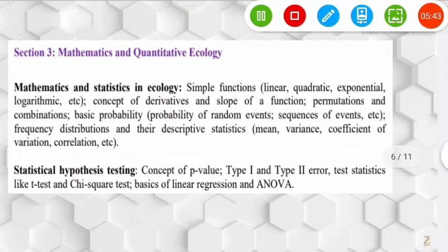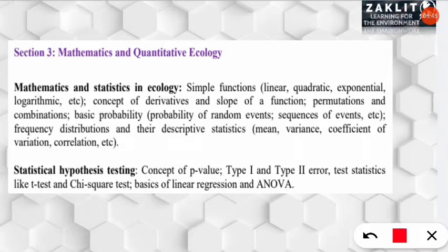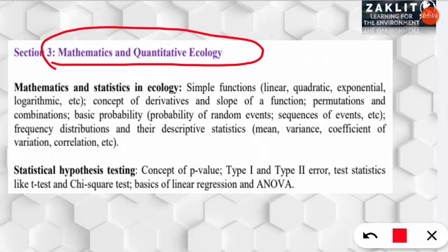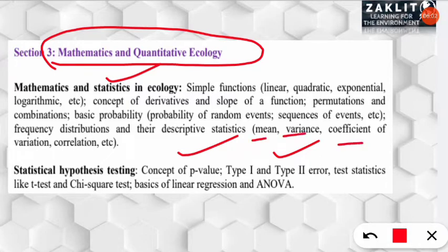The third section deals with mathematics and quantitative ecology, where statistics is very important. If you have a strong grip on statistics, you will do well in this exam. Topics include ANOVA, type 1 and type 2 errors, and the concept of p-values.